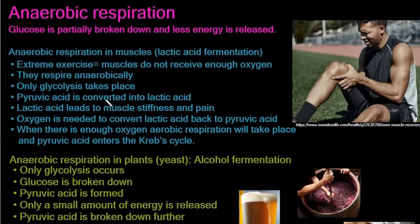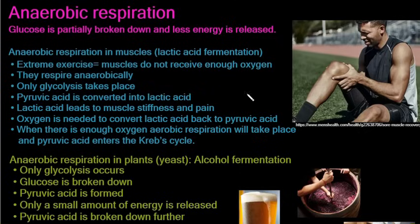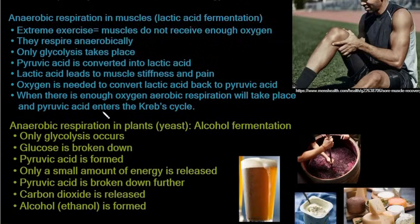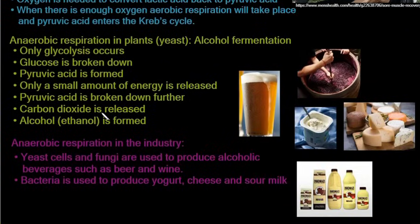In lactic acid fermentation, pyruvic acid is converted into lactic acid, which causes muscle stiffness and pain. Oxygen is needed to convert lactic acid back to pyruvic acid so it can enter the Krebs cycle. In alcohol fermentation in plants, only glycolysis occurs, glucose is broken down, pyruvic acid is formed, and then carbon dioxide and ethanol are produced.